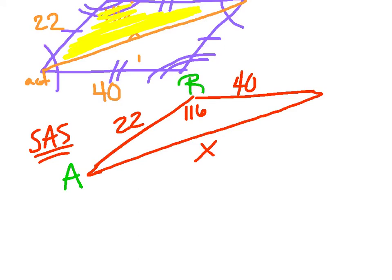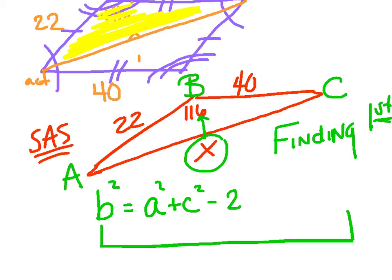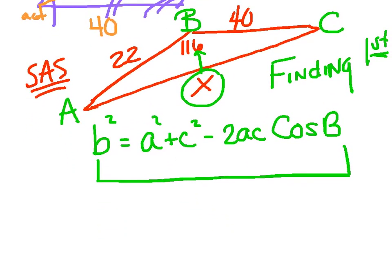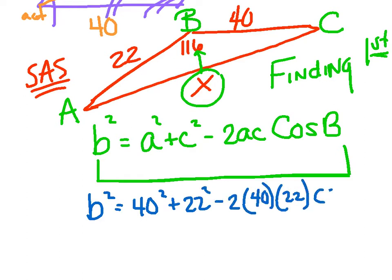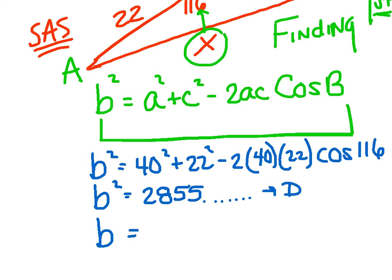Label your sides if they don't have them — I'm going to go A, B, C. What you're finding comes first — I'm finding the diagonal, which is across from B. So I start with B. B squared equals — start and end with the same letter, use the other two: A squared plus C squared minus 2AC cosine B. Just plug and chug: B squared equals 40 squared plus 22 squared minus 2 times 40 times 22 cosine of 116. I get B squared of 2855. Store that into D, square root both sides, and to the nearest integer B equals 53.